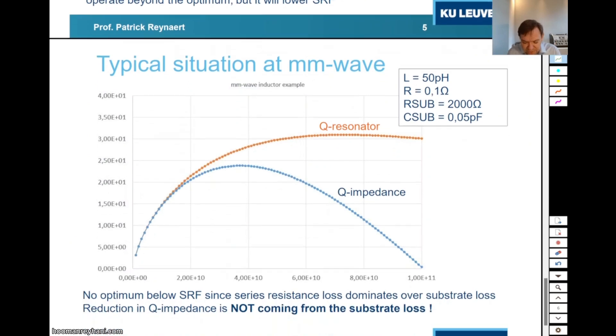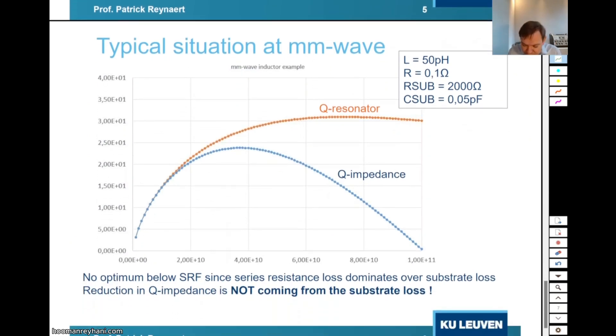But at millimeter-wave frequencies, things are quite different. At millimeter-wave frequencies, you have much, much smaller inductors. And as a consequence, we see far less capacitance towards the substrate. And because of that, because you occupy far less area, also your substrate resistance is much, much higher. So the consequence of all that is that our resonator-based Q factor actually is all the way up to 100 GHz. It is dominated by the series resistance, dominated by the skin effect. And it's only at much, much higher frequencies that you would see the substrate loss.